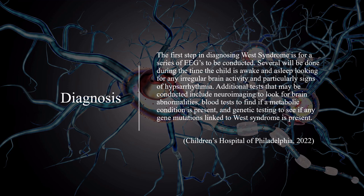The first step in diagnosing West Syndrome is for a series of EEGs to be conducted. Several will be done while the child is awake and asleep, looking for any irregular brain activity, particularly signs of hypsarrhythmia. Additional tests may include neuroimaging to look for brain abnormalities, blood tests to find if a metabolic condition is present, and genetic testing to see if any gene mutations linked to West Syndrome are present.